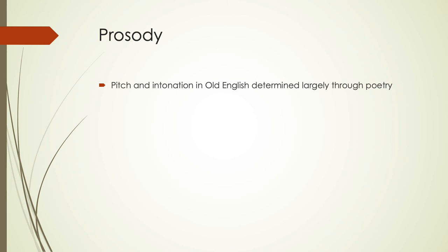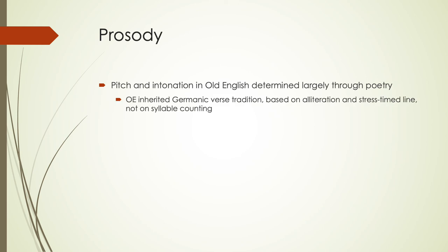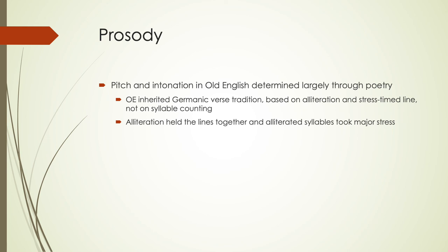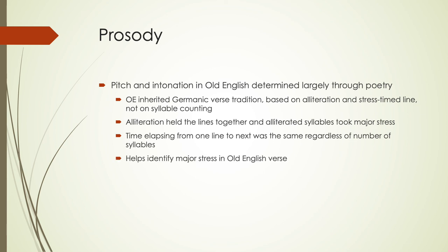In terms of prosody — pitch, intonation, the sounds of how we're making these utterances — a lot of what we know is determined through poetry. A lot of Old English writings were either poetic or translated from Latin, so we don't always have much information about prosody in everyday language. But poetry gives us interesting information about stress and timing of syllables. Old English inherited the Germanic verse tradition, which was based on alliteration and a stress-timed line rather than counting syllables. Alliteration held the lines together, and the alliterated syllables took the major stress. The time elapsing from one line to the next was the same regardless of the number of syllables, because it was about stress timing.